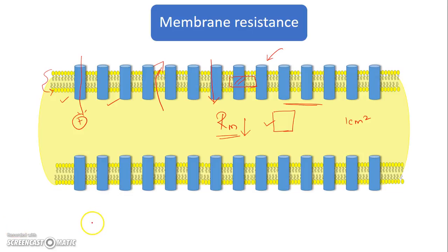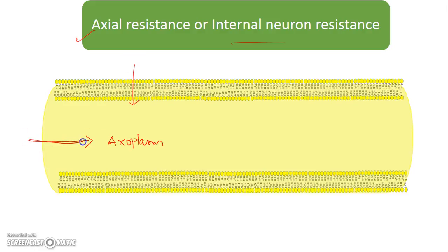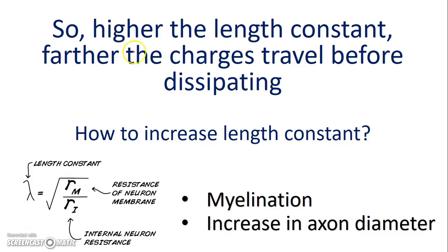The second property of the neuron that determines the length constant is the axial resistance, or internal neuron resistance — the resistance offered by the axoplasm for the movement of ions. These two properties, membrane resistance and internal neuron resistance, determine the length constant. We know that the higher the length constant, the farther the charges travel before dissipating. So, how do we improve the length constant? By changing the membrane resistance and the internal neuron resistance.